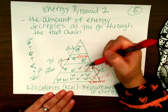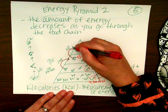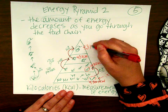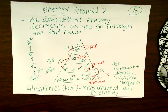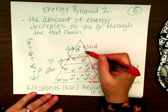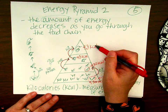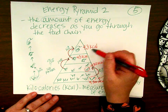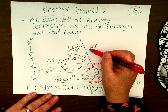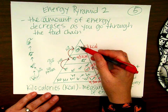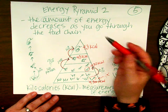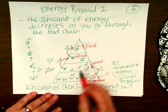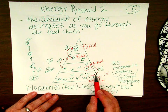The snake eats the bird but only gets 10%, so it only gets 4.3 kilocalories. That's why the snake is constantly having to spend all its time hunting and eating — because the further up the food chain you go, the less available energy there is. That's why the top of the pyramid is the smallest area and the bottom is the biggest.